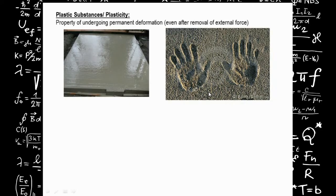Now we are going to see what is plasticity. Plasticity is the property of undergoing permanent deformation even after the removal of external force — a substance gets deformed permanently even after we remove the applied force. For example, if there is a cement road getting constructed and a kid comes and presses his hand over it, it will get permanently deformed into that shape if not corrected in time.